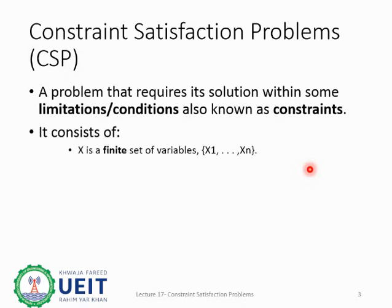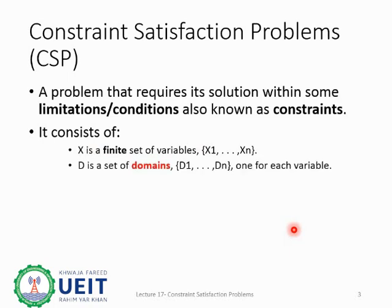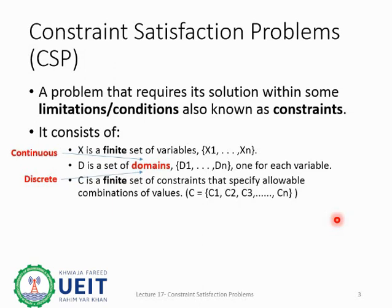A set of variables is marked by X and it stores the solution. A set of domain, D, is the set of values that each variable can take. Note that elements in the domain can be both continuous and discrete, but in AI we generally only deal with discrete values. Set of constraints, C, is a set of rules based on which variables are assigned values from the domain. Note that variable set X and constraint set C should be finite, except for domain set D.